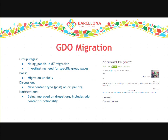Once that migration's done we'll cut that off. We won't be doing OG panels — we're looking for specific group pages with various layouts on a case-by-case basis. As for polls — a quick raise of hands showed nobody ever used them, so poll migration is unlikely. Discussions are now posts on drupal.org, so we'll migrate all discussions into posts. And notifications — we are improving notifications in general on drupal.org, so what you expect out of GDO should be available on drupal.org as well.